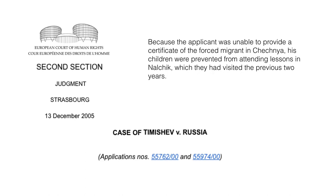In Timyshev against Russia, children were prevented from attending lessons in a school in Malchik, which they had attended the previous two years, because the applicant was unable to provide a Certificate of Forced Migration in Chechnya.